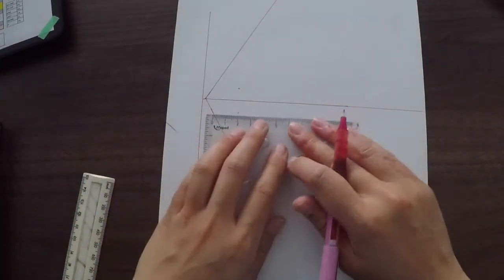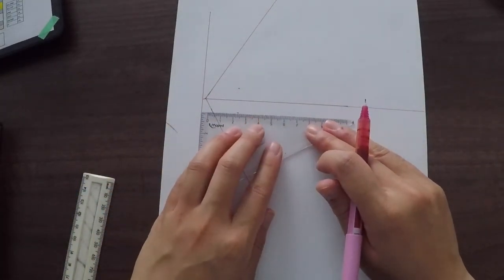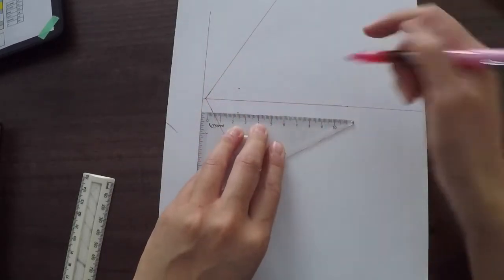Then you get your set square again and you're going to measure it out and line it up against the lines that you've drawn here.